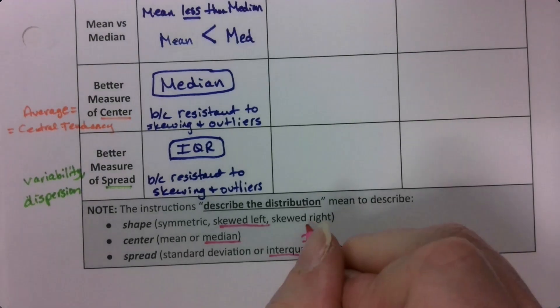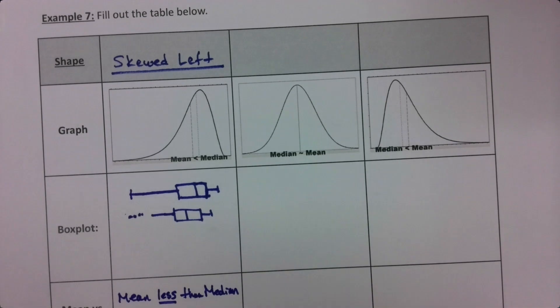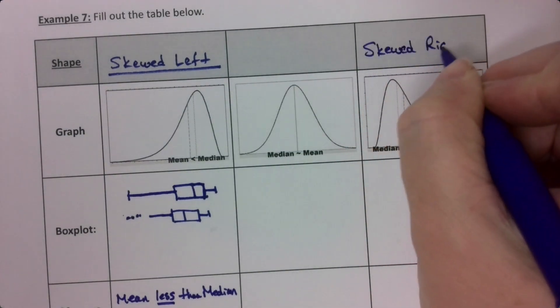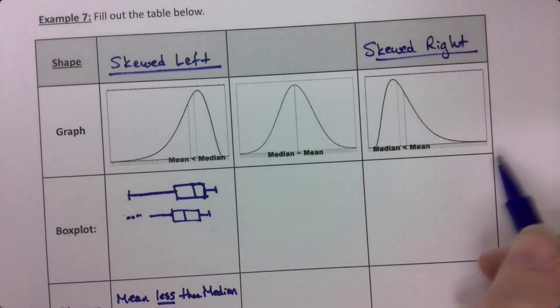And while I'm at it, I would do the same thing if it was skewed right. So let's go look at that one, which is over here. So if it's skewed right, it's exactly the same. Skewed right has a tail to the right.